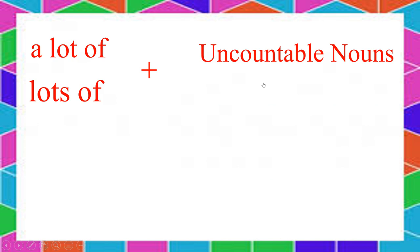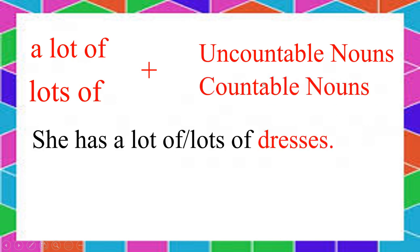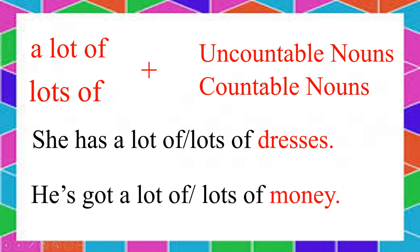The words 'a lot of' and 'lots of' are the same — they have the same meaning and go with both uncountable nouns and countable nouns. For example: She has a lot of / lots of prices. Or: He's got a lot of / lots of money. So 'prices' is a countable noun and 'money' is an uncountable noun — 'a lot of' and 'lots of' go with both.